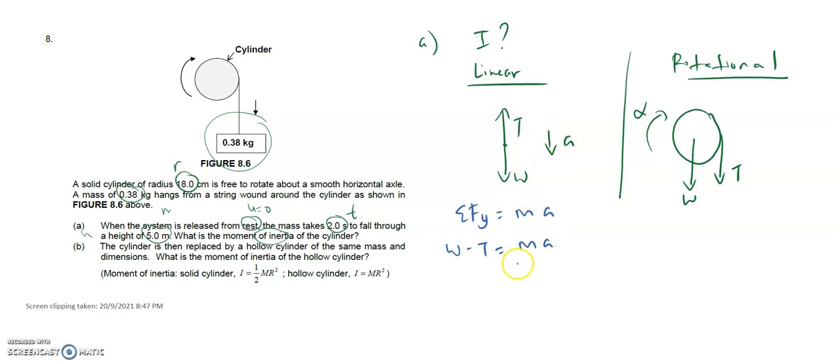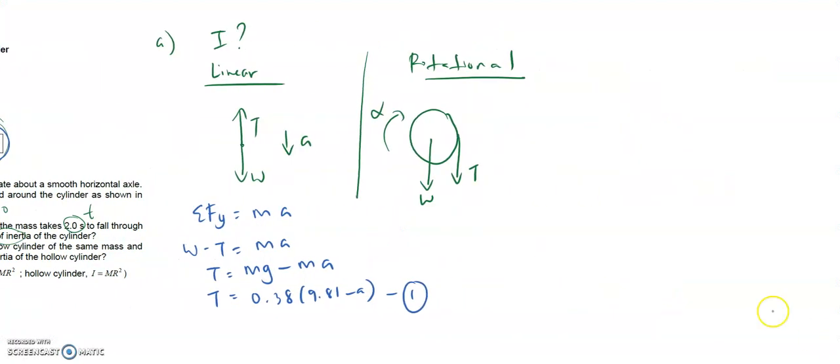Here is W minus T equals ma. So I make T as my subject: T equals mg minus ma. And here we are talking about the mass of the load, 0.38 times 9.81. Do we have a? No, we don't have a. So leave it as the first equation.